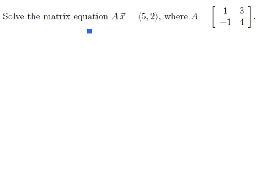So we're being asked to solve the matrix equation [1, 3; -1, 4] times the vector X, and have the output be the vector (5, 2).